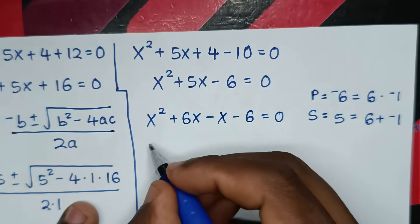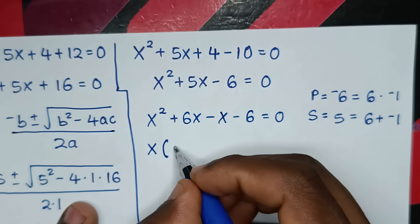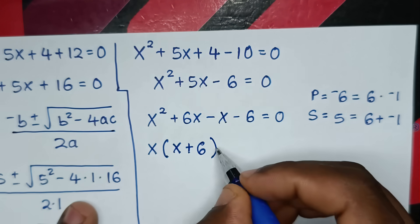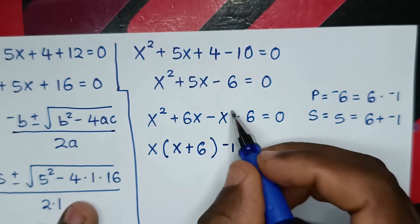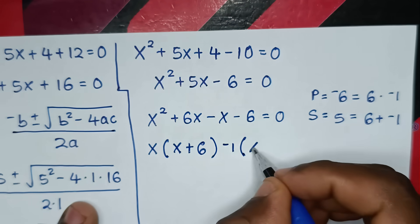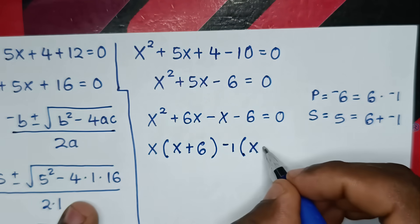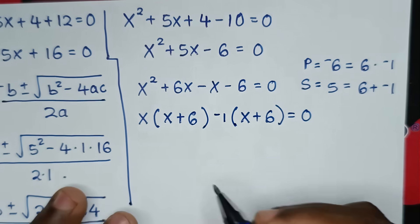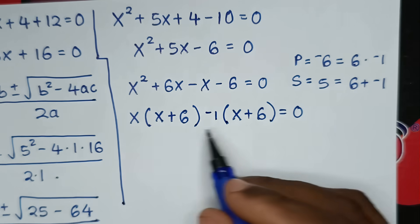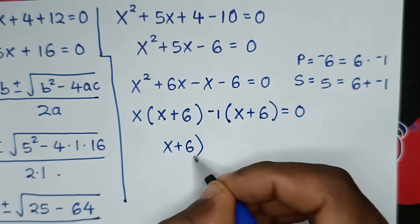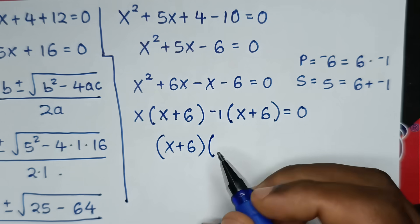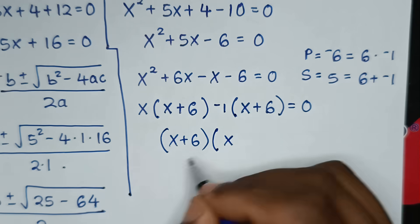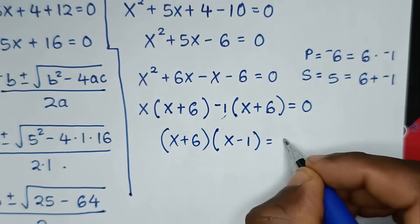Factoring by grouping: x is common in the first two terms giving x(x + 6), and -1 is common in the last two terms giving -1(x + 6). So we have (x + 6)(x - 1) = 0.